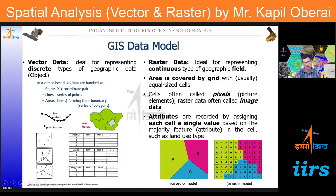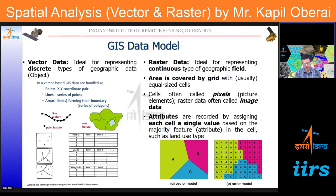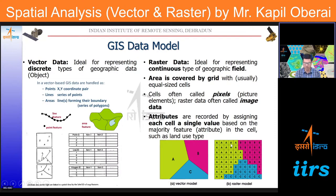Raster is ideal for representing continuous phenomena, called fields. There are two types of geographic phenomena: objects, which are well represented by the vector model, and fields, for which we use raster. In raster data, the area is covered by a grid of pixels or picture elements containing actual data. From an attribute perspective, each cell is assigned a single value — for example, land use type represented as a polygon in vector can be represented by a series of pixels in raster, depending on resolution.